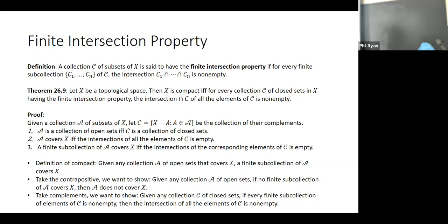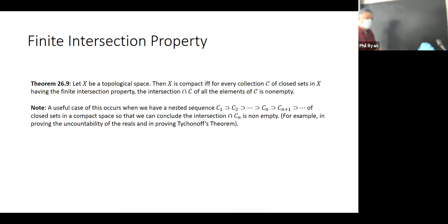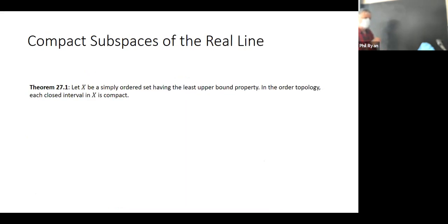We've already seen how the definition of compact is easy to use — we've proved a lot of things in a straightforward way, and this alternative definition also gives us something nice. Now let's consider the real line and think about compact subspaces. We want to generalize, so let's talk about any space which is simply ordered and has the least upper bound property.